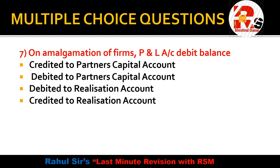Question 7: On amalgamation of firms, profit and loss debit balance — note that a debit balance in P&L means miscellaneous expenses or fictitious assets, which are imaginary assets. In amalgamation, if P&L has a debit balance, it is debited to the partners' capital account. If P&L has a credit balance, it is written on the credit side of the partners' capital account. This is an important concept.